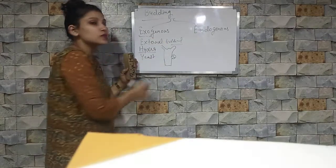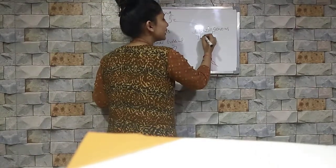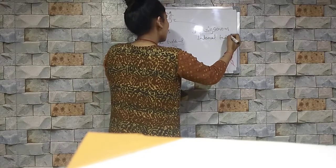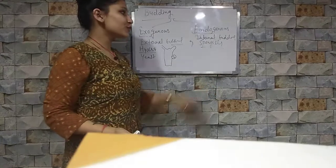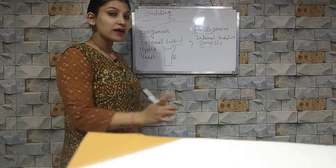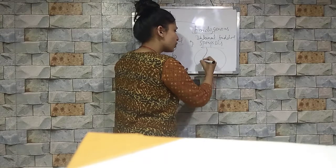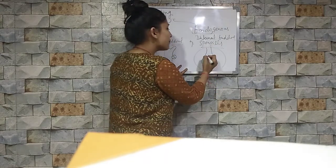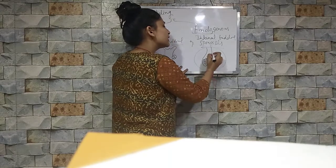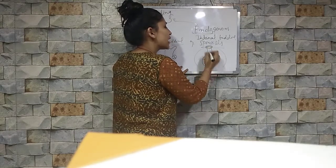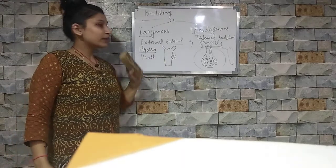Endo means inside, so endogenous budding means internal budding. The bud forms inside the parent body. An example is Spongilla, which belongs to kingdom Animalia, phylum Porifera. In Spongilla, there is a gemmule which has small archaeocytes inside. In unfavorable conditions, the gemmule is formed, and when conditions improve, it comes out through the micropyle to form a new organism.